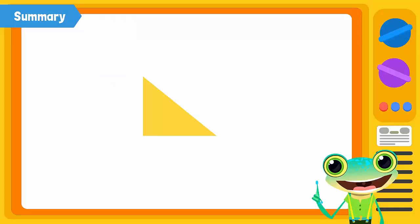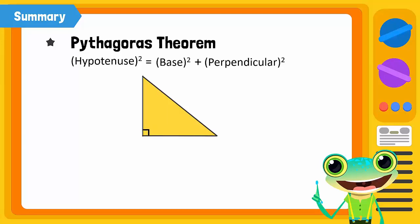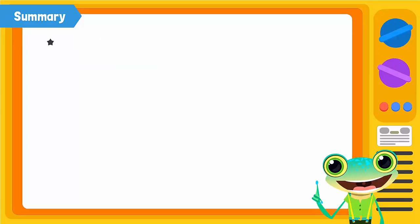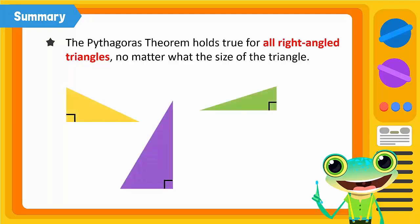Let's summarize. The Pythagoras theorem states that in a right-angled triangle, the square of the hypotenuse is equal to the sum of the square of the base and the square of the perpendicular. In other words, the square of the longest side is equal to the sum of the squares of the other two shorter sides. The Pythagoras theorem holds true for all right-angled triangles, no matter what the size of the triangle is.